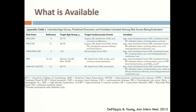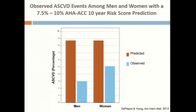We looked at what was in practice at the time: a couple of Framingham risk scores that looked at CHD or CVD, the guideline-recommended ATP3 score, the Reynolds risk score, and this new score. We wanted to see how this new score, now promoted in the guidelines, stood up against the others. And I don't want to belabor this, but it didn't perform any better.